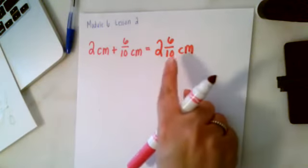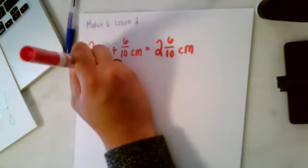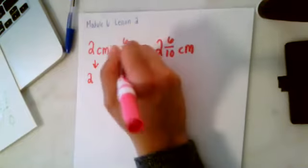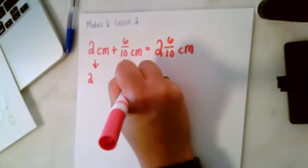Now if I wanted to write this mixed number in decimal form, the 2 would stay a 2 and the 6 tenths would change to 0.6.